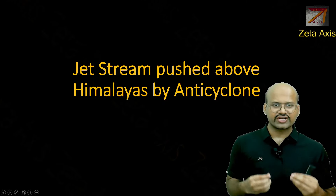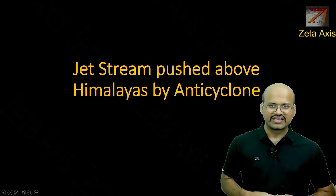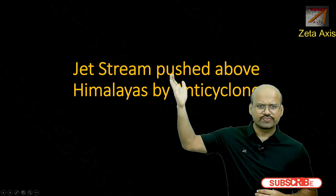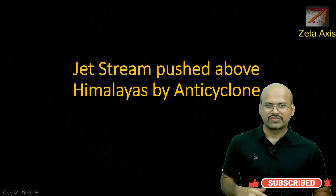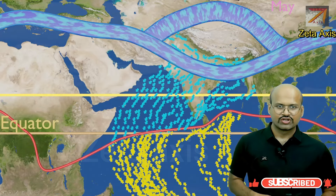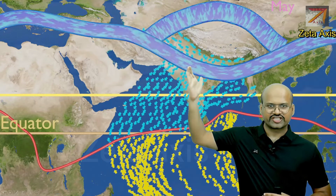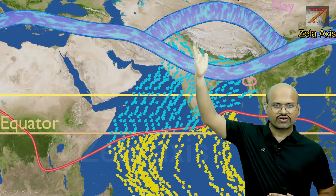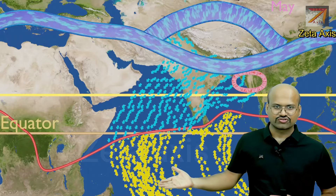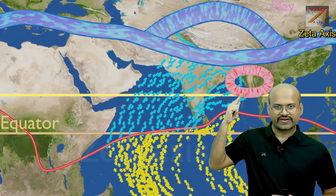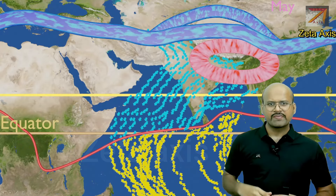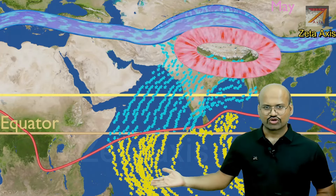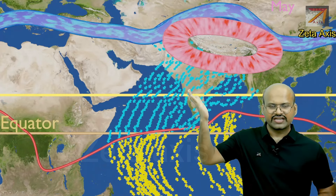Now let's see another important event: the jet stream, which was moving south of the Himalayas, is pushed north of the Himalayas by anticyclonic winds during the month of May or June. The southern branch of the jet stream flowing south of the Himalayas maintains high pressure over India, not allowing monsoon winds in. But an anticyclone develops and slowly pushes this southern jet stream north of the Himalayas, thus allowing monsoon winds to reach over the Indian subcontinent.